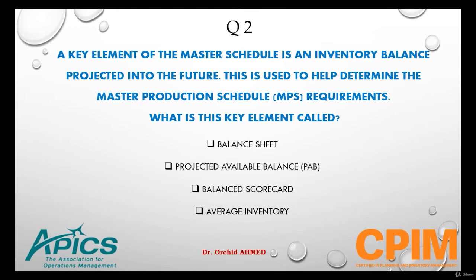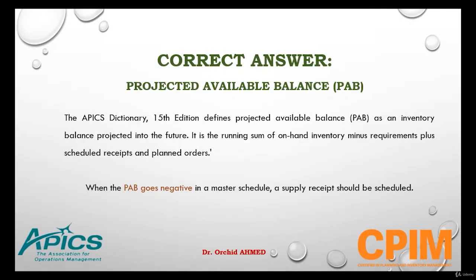The right answer is Projected Available Balance. The APICS Dictionary, 15th edition, defines Projected Available Balance as an inventory balance projected into the future. It is the running sum of on-hand inventory minus requirements plus scheduled receipts and planned orders. When the projected available balance goes negative in a master schedule, a supply receipt should be scheduled.